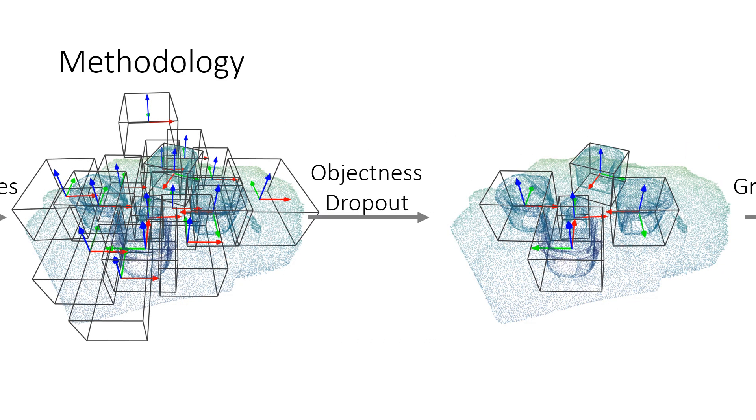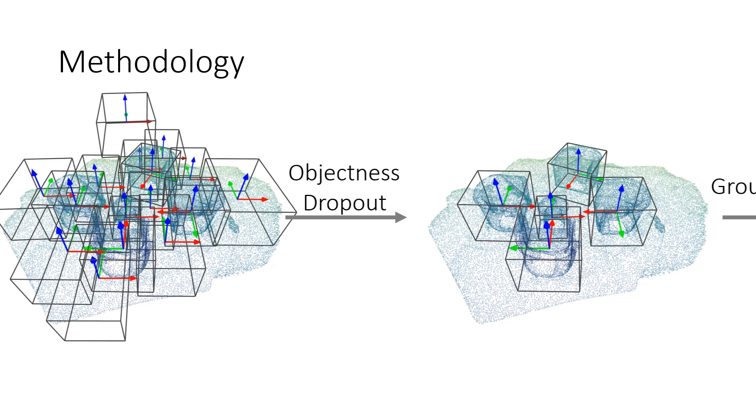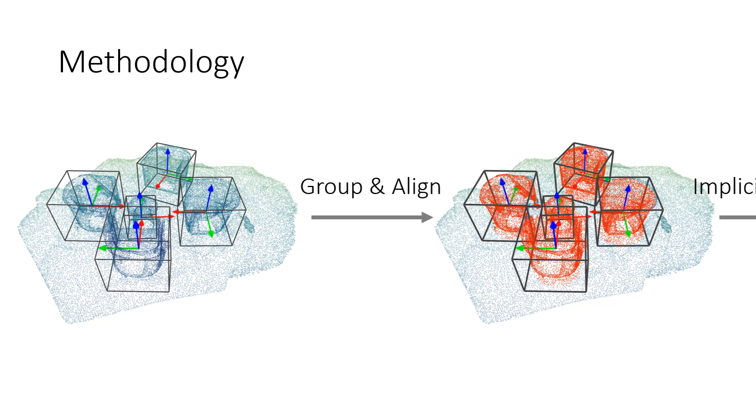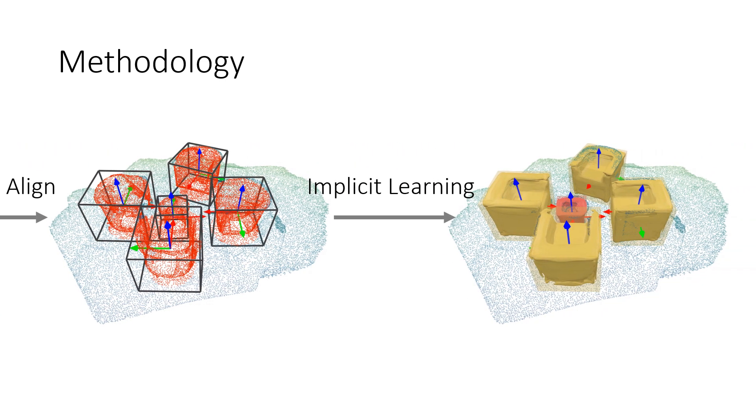We reserve boxes with higher objectness from all proposals to ensure shape generation from meaningful 3D points. Points close to the positive proposals are grouped and aligned, which supports implicit learning to recover shapes with high resolution.